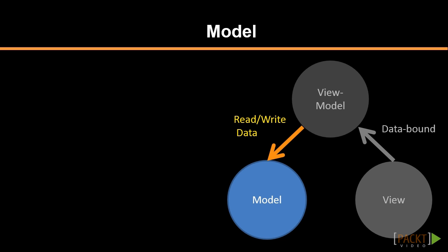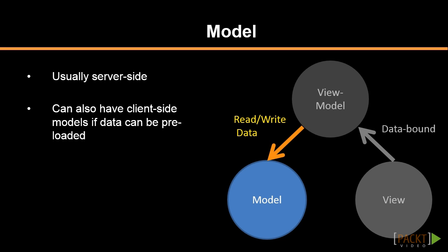First is the model. The model is typically considered to be the data model or data access layer of the knockout application. The model could also reside on the client side through HTML5's local storage. It is also possible to have a model on the client side that directly maps one-to-one with the database models on the server.